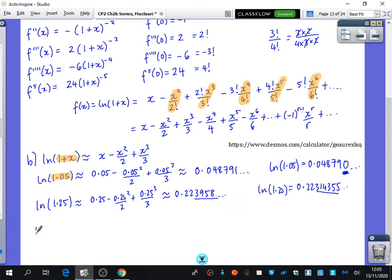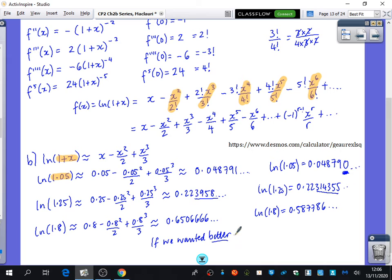And now we know what's going to happen for this last one. When I do ln(1.8), I would have 0.8 - 0.8²/2 + 0.8³/3. We're thinking this one's going to be even less of a good approximation. I get 0.65066, and ln(1.8) is actually 0.587786. So this is not a good approximation because we use the first three terms only. If we wanted better estimates, use more terms in the Maclaurin expansion.